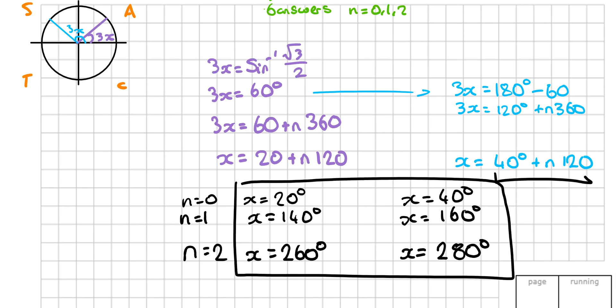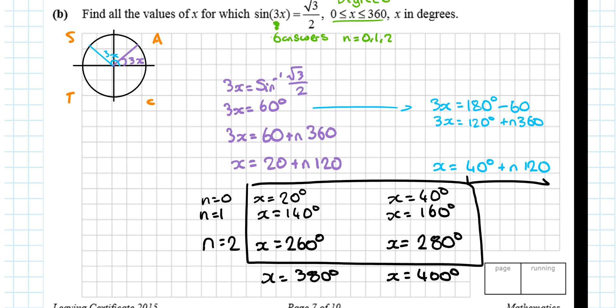Out of curiosity, if you went and used n equals 3, you'd get x equals 180 degrees and x equals 400 degrees. And why we do not count those is because they're not between 0 and 360, so you would not use n equals 3.